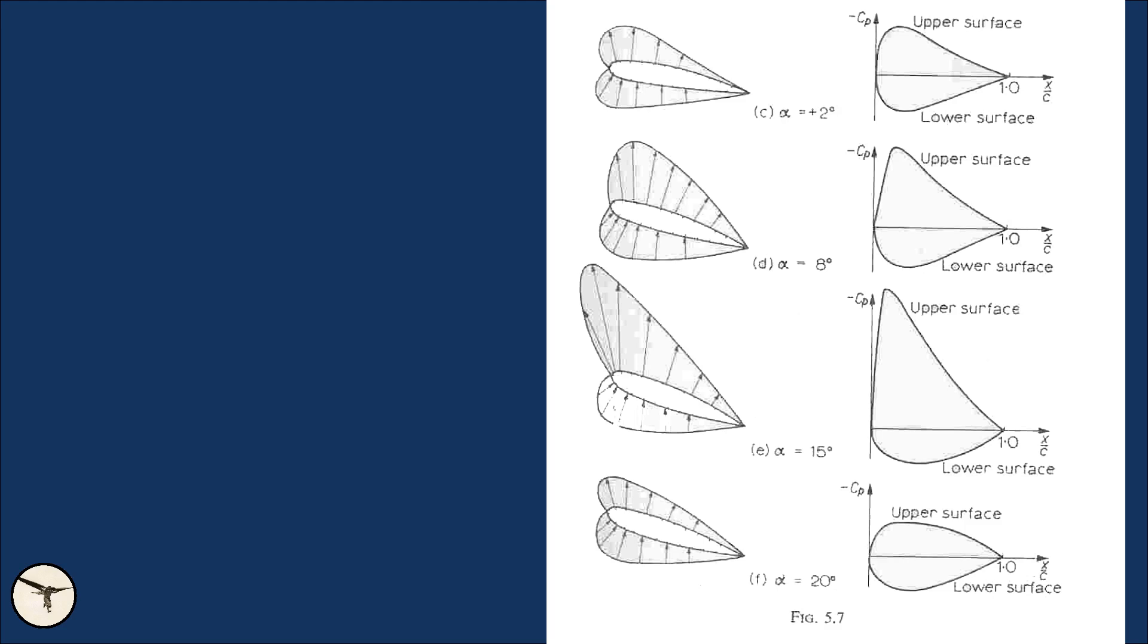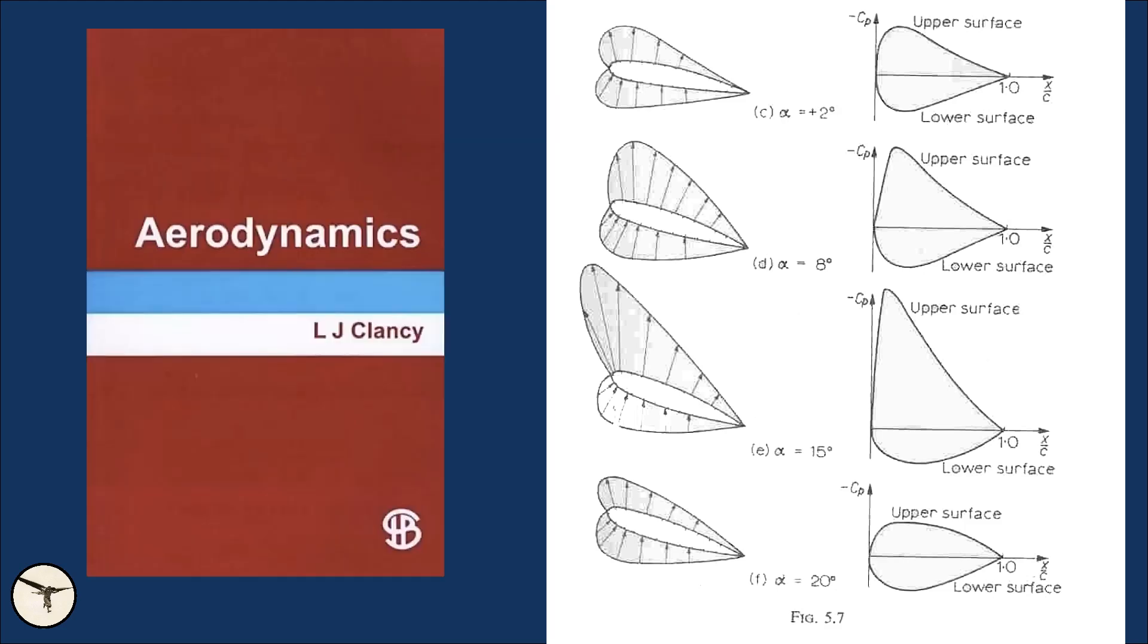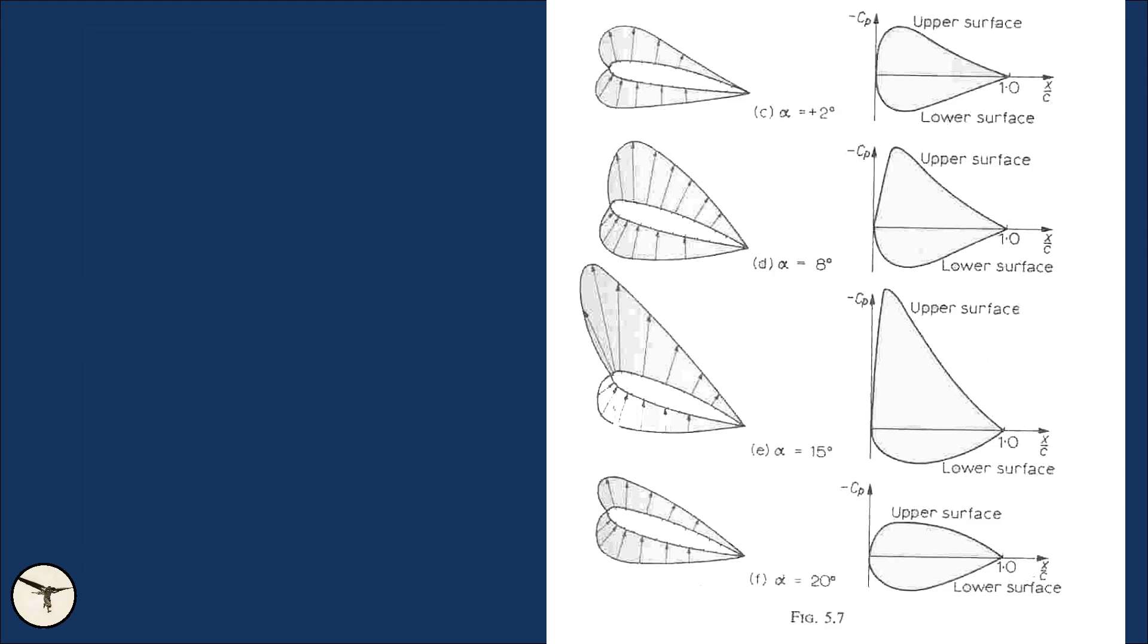This illustration is from Aerodynamics by L.J. Clancy. It shows the pressure distribution over and under the wing at various angle of attack. Above the wing, the pressure is less than atmospheric pressure. Below the wing, the pressure is higher. And the difference is lift.